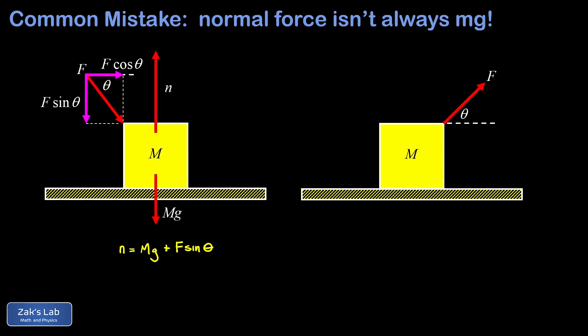We can view this intuitively by just saying the normal force will always push with the right magnitude to keep the block constrained to the floor. And since we're pushing the block down, the normal force has to counteract that by pushing up a little harder.